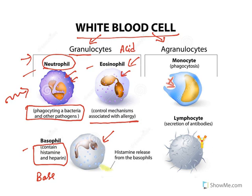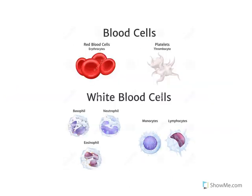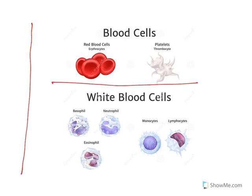Basophils release histamines. Agranulocytes have no visible granules; they include monocytes and lymphocytes. The total blood cells include red blood cells, platelets, and white blood cells such as basophils, neutrophils, eosinophils, monocytes, and lymphocytes.